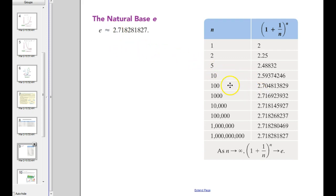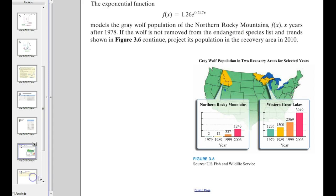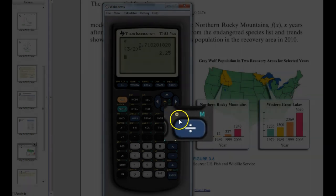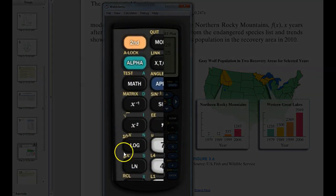But it is something that we are going to use in this class. Now, when E is being raised to a power, which it is for our example right here, when it's being raised to a power like that, instead of using this E right here, instead we use 2nd LN, which is this E to the X power.